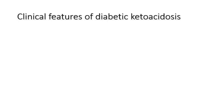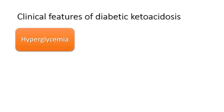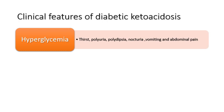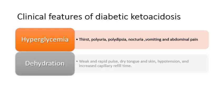The clinical features of diabetic ketoacidosis can be derived from its pathophysiology. Symptoms related to hyperglycemia include increased thirst, polyuria, polydipsia, and nocturia. There is also vomiting and abdominal pain as a result of severe hyperglycemia. As a result of increased osmotic diuresis, there will be dehydration manifesting as hypotension, weak thready peripheral pulsation, cold extremities, dry skin, and increased capillary refill time.